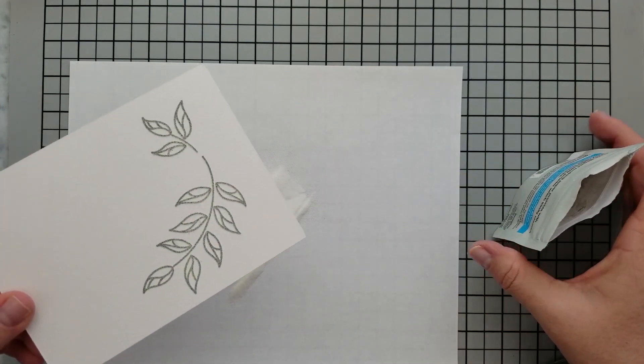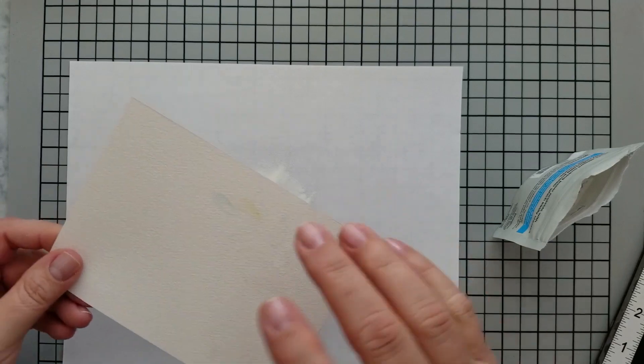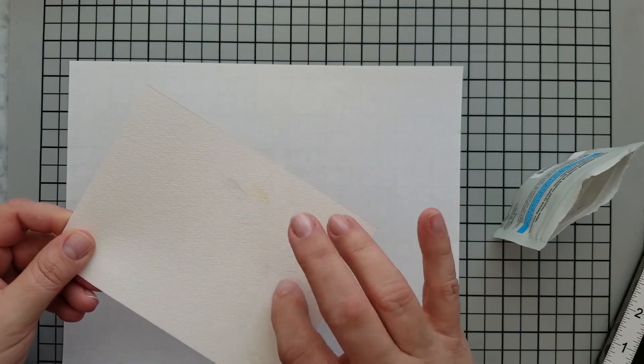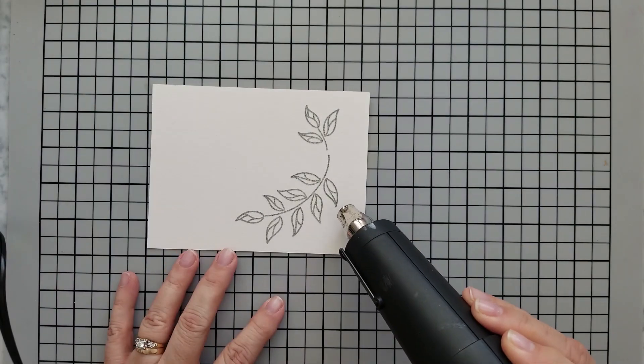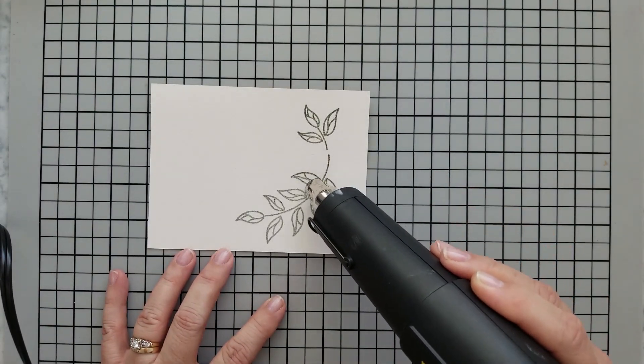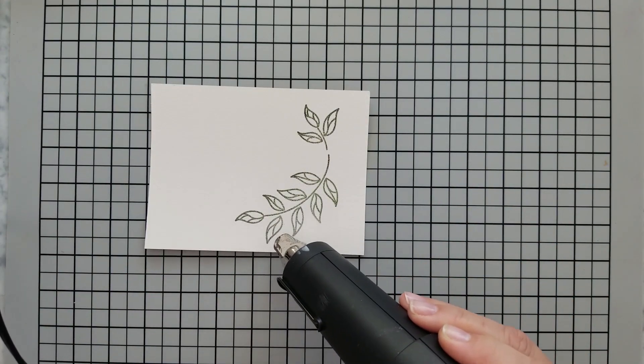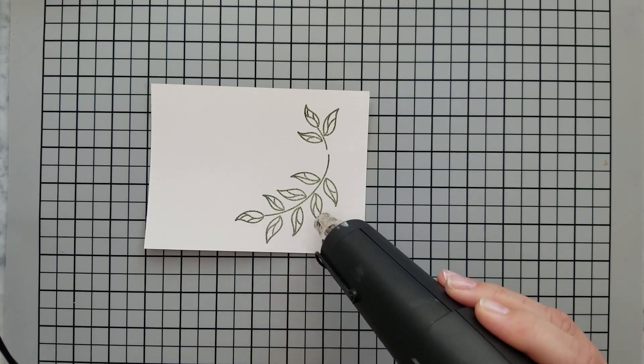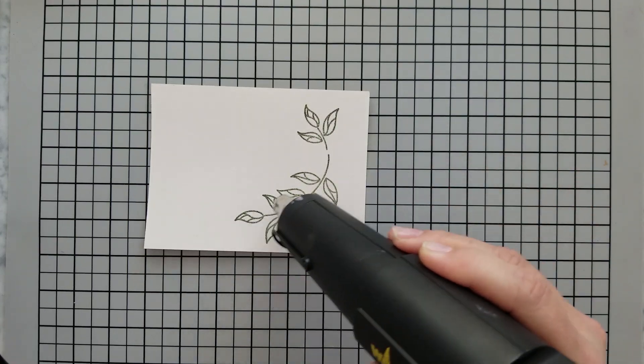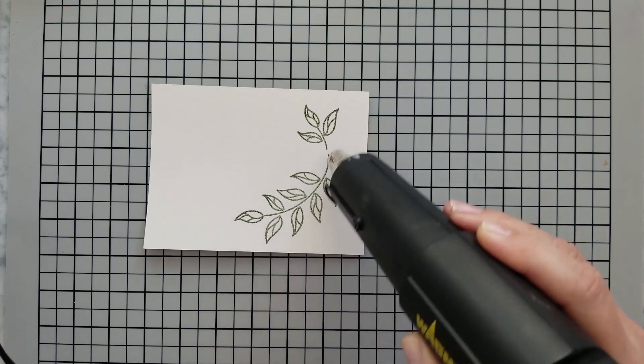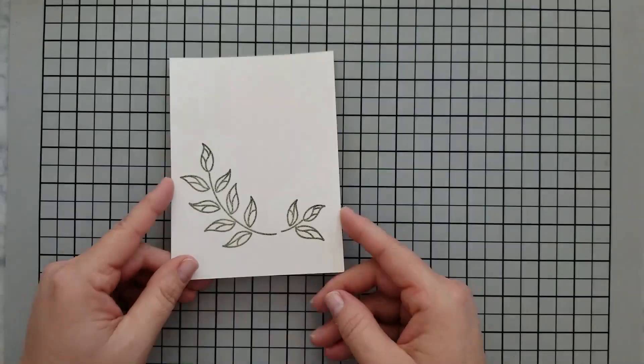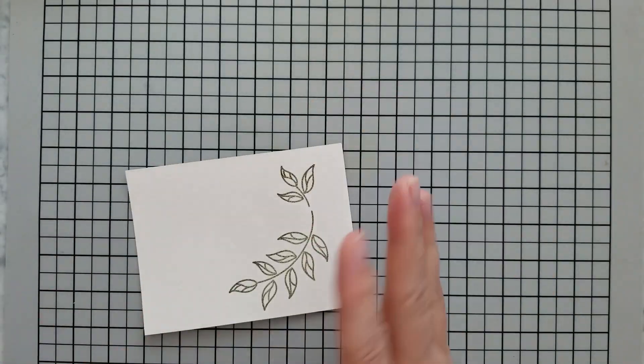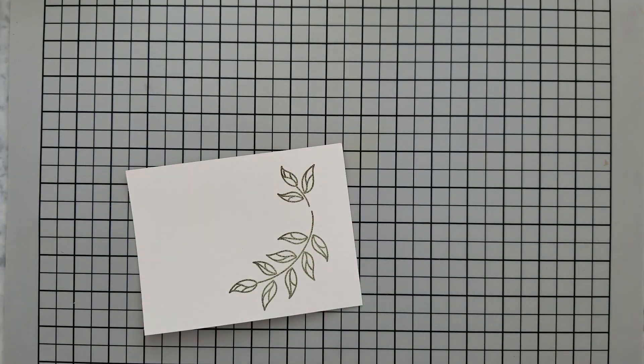Now you need to come in with a preheated heat gun. You want this powder to start melting immediately when you take that heat to it. The less time that heat is on the paper, the less warping you're going to have. You don't want to shake your gun back and forth. I know it looks like that's what I'm doing here, but this is sped up so I'm actually not doing that. You just want to chase that melting powder with your heat gun. You'll know it's done when it becomes shiny and dimensional.